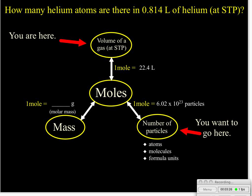So in this case, we really do care about how many individual particles we have. Since there is no direct connection between the volume of a gas at STP and the number of particles, the only route we can take takes us through the moles. So our first step will be to convert from liters to moles. Our second step will go from moles to individual atoms.